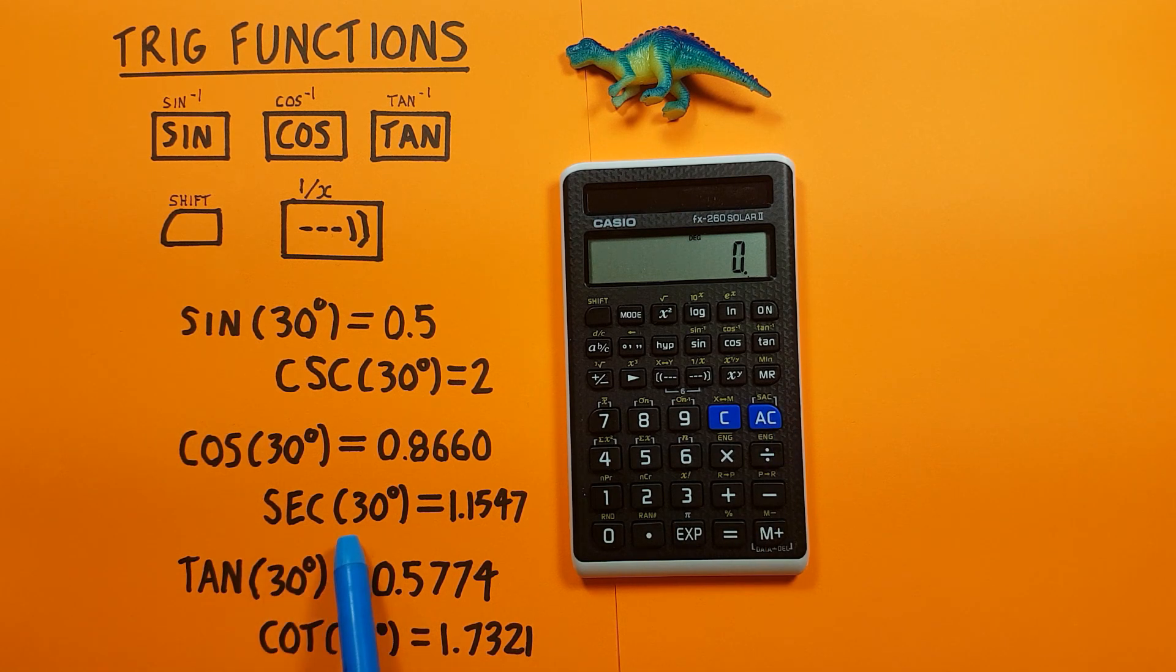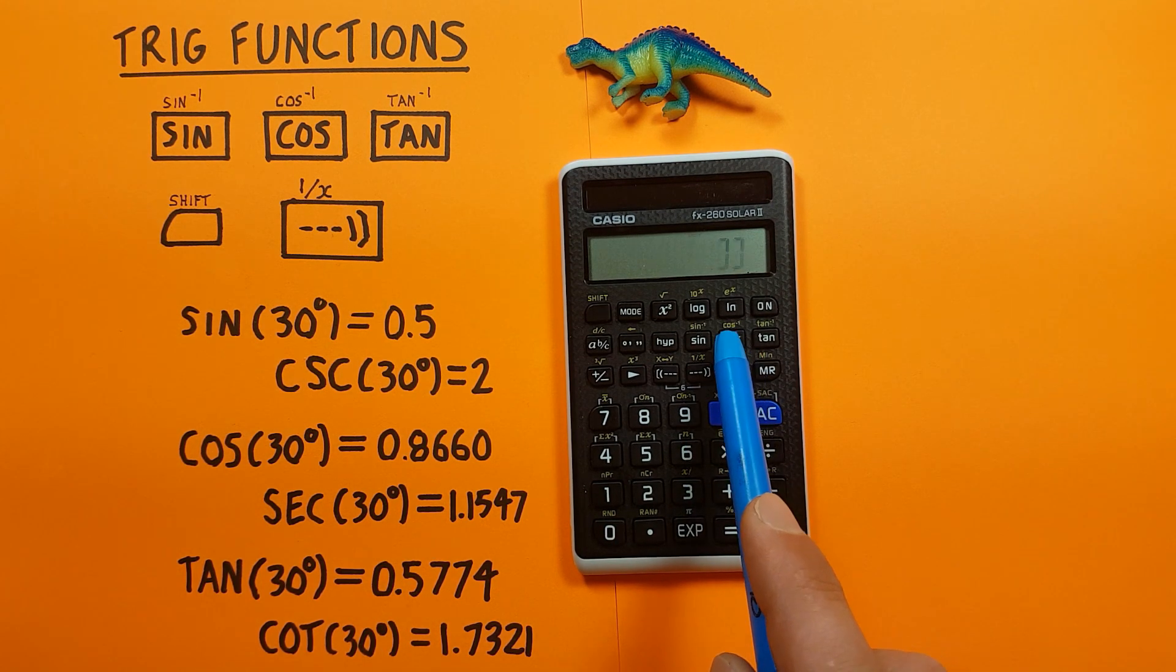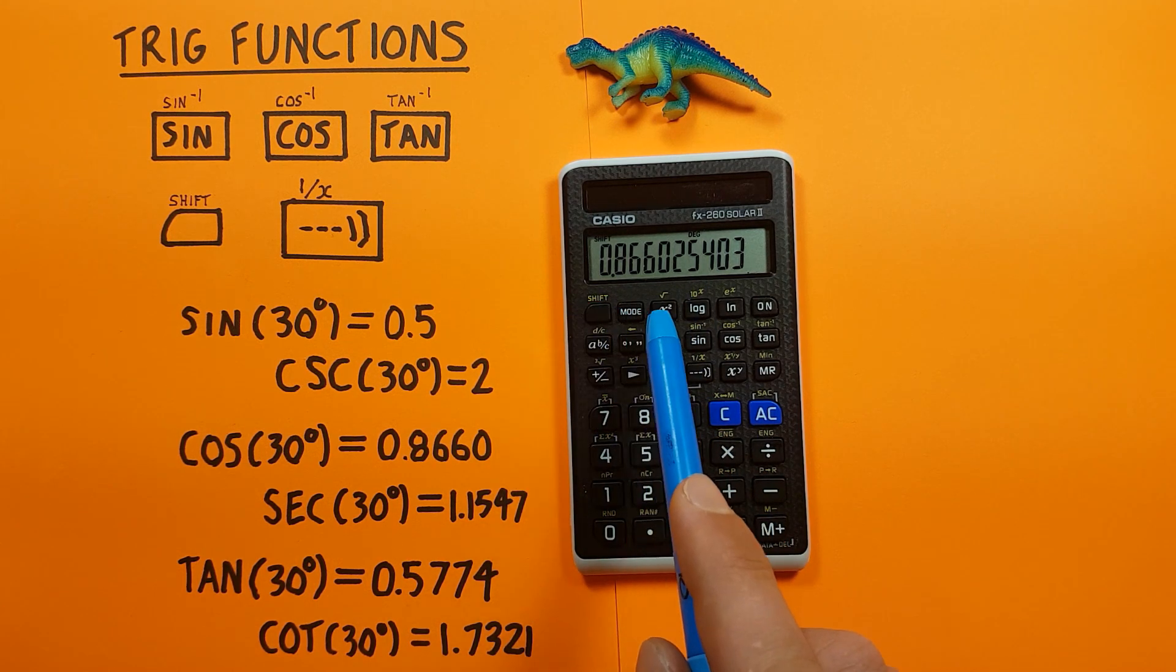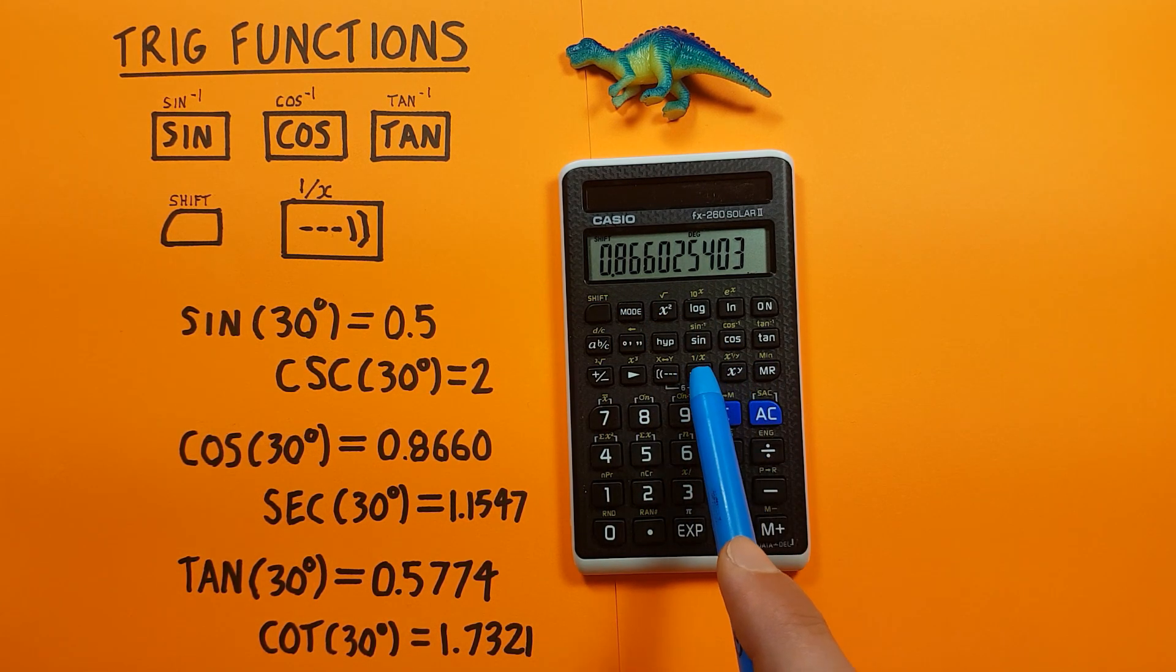For secant, we use cos. So for secant of 30 degrees, again we type 30 and then cos—there's our cosine result—and then we press shift, inverse, and we get a secant of 1.1547.